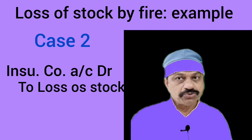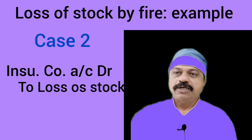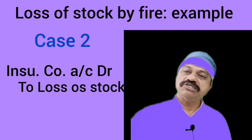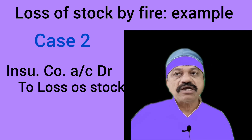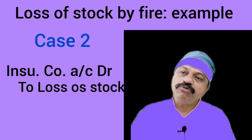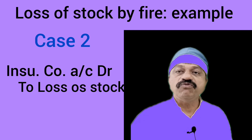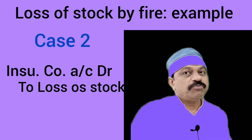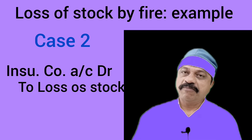Case number two: stock was fully insured. In this case, the insurance company's account will appear on the asset side of the balance sheet as a debtor. When the insurance company pays the claim of Rs. 5,000, cash or bank account will be debited for Rs. 5,000 and the insurance company's account will be credited. The adjusting journal entry is: insurance company's account Dr. Rs. 5,000 to loss of stock account Rs. 5,000.